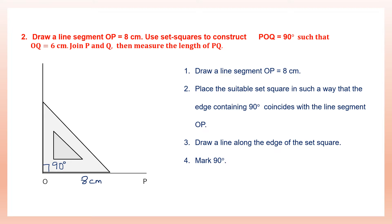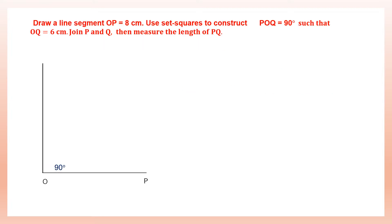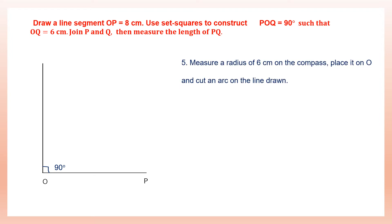Now we need OQ to be 6 centimeters, so we need to mark Q. O is already there and that should be 6 centimeters. Remove the set squares. Measure a radius of 6 centimeters on the compass, place it on O as the center, and cut an arc on the line drawn. Place the needle at O, take 6 centimeters on your compass, and draw an arc cutting the line. Mark that intersecting point as Q.